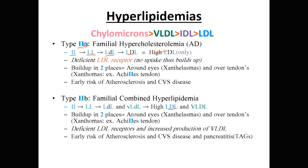Type 2a is due to a deficiency in the LDL receptor, so LDL is not absorbed and remains in the blood. Cholesterol builds up in specific areas: around the eyes — xanthelasmas — and over and around tendons — tendinous xanthomas, classically the Achilles tendon. This also leads to atherosclerosis and cardiovascular disease.